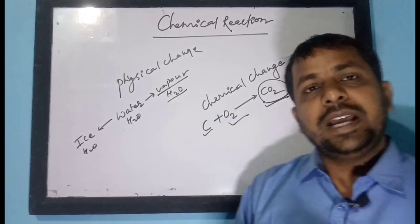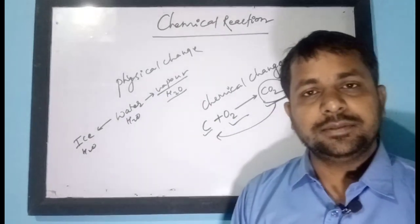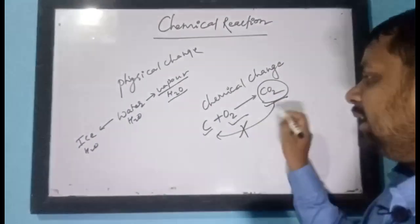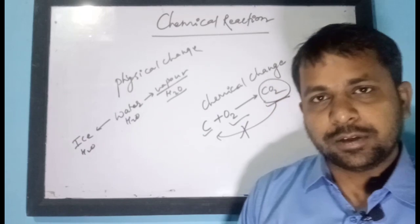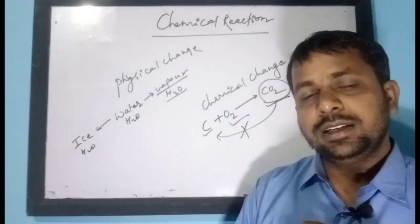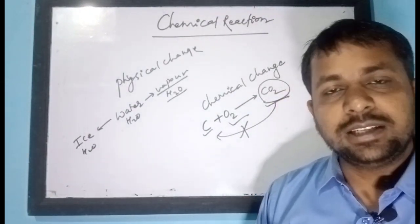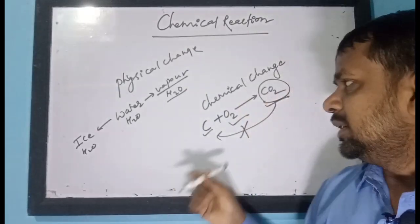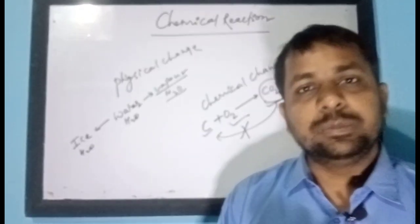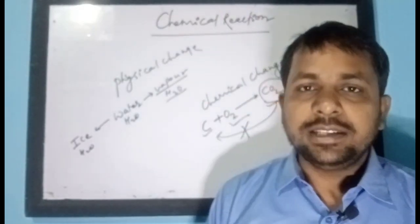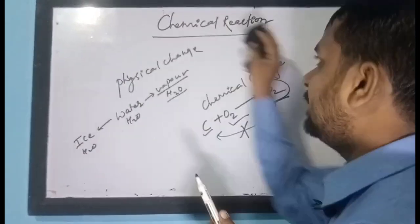Once the wood has been changed into carbon dioxide, it cannot be changed back into carbon and oxygen. This is a permanent change — it cannot be reversed back to its original form. So we can say chemical change is a permanent, irreversible change in which new substances are formed with new chemical composition. Now let us look at what is a chemical reaction.